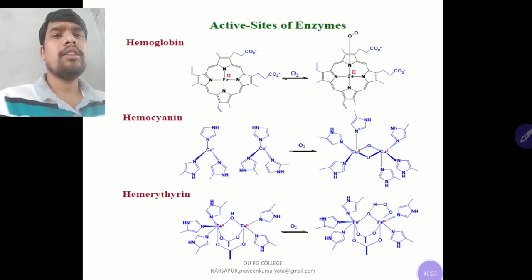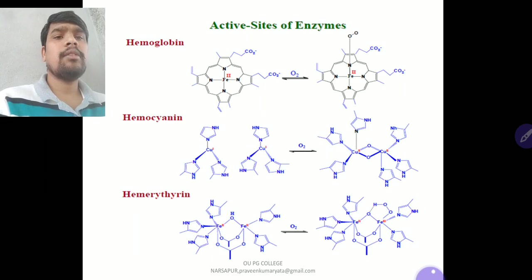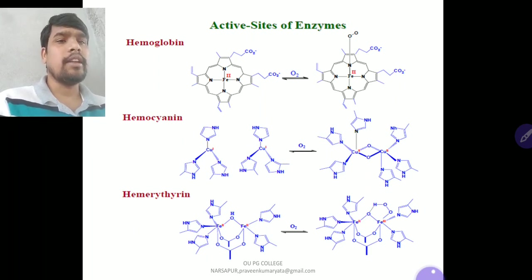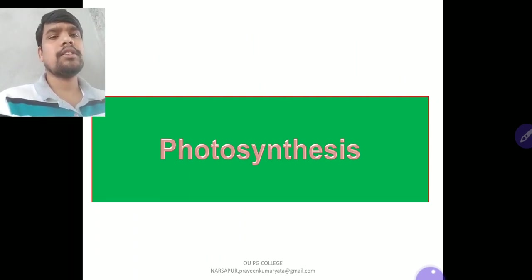Comparison of hemoglobin, hemocyanin, and hemerythrin: hemoglobin and hemerythrin contain iron, while hemocyanin contains copper. In the deoxy state, hemocyanin and hemerythrin are colorless. Upon oxygenation, hemocyanin turns blue and hemerythrin turns purple, while hemoglobin/myoglobin are red. The next part of this unit will cover photosynthesis.